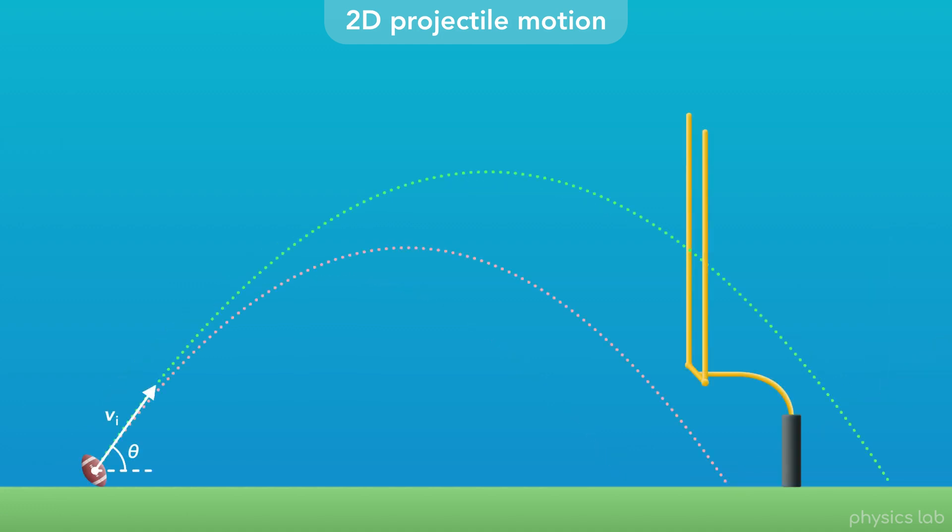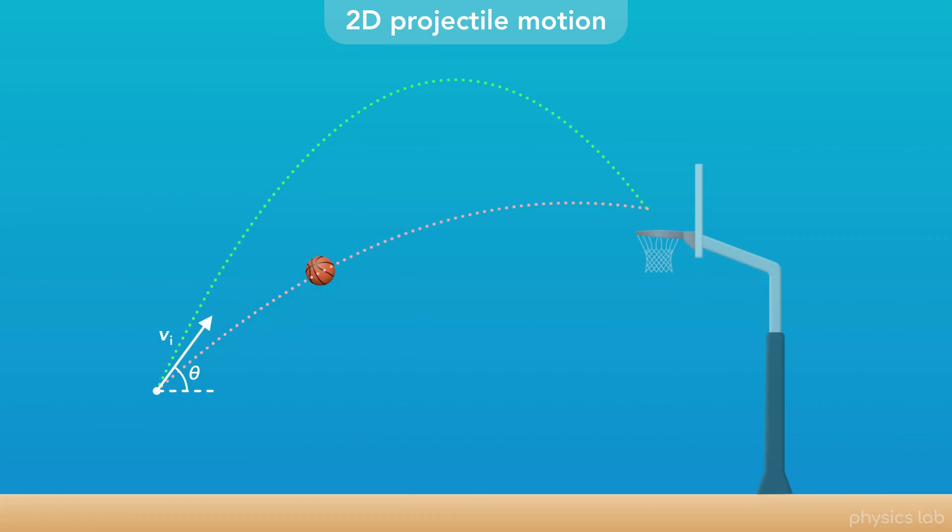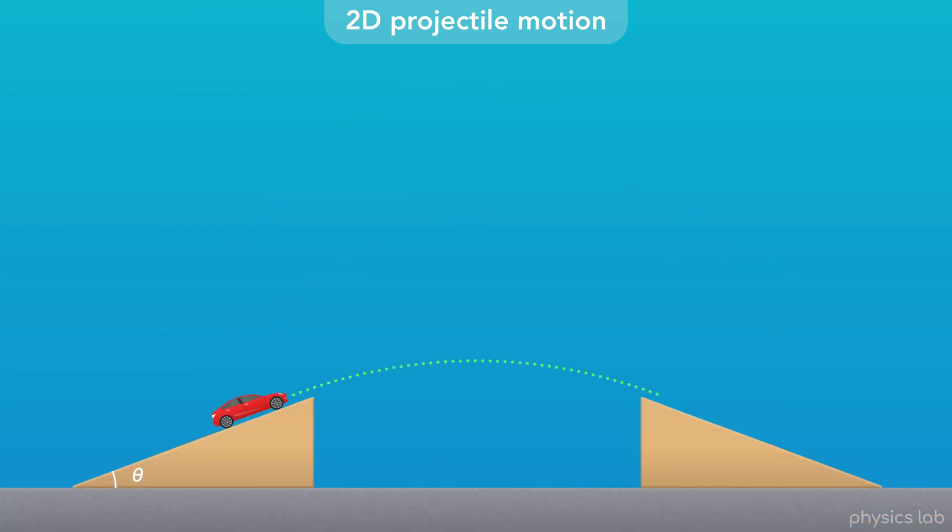The initial velocity and angle determine how far the ball travels and how high it is at each point. They also determine the direction of the velocity at every point along the path. Changing the initial angle just a few degrees changes the entire trajectory.